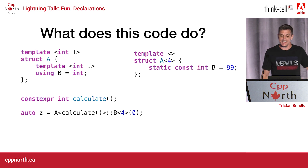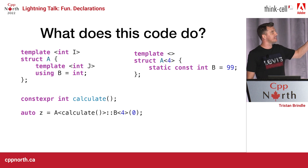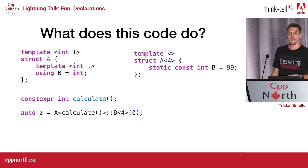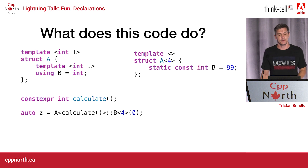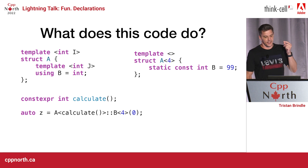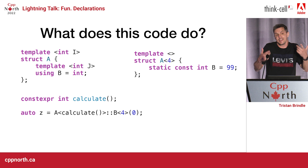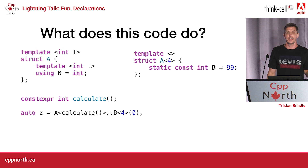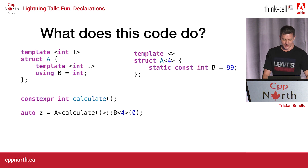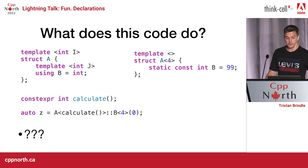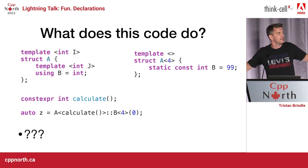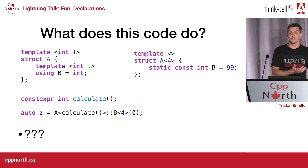So what this is saying is: is 99 less than four? The result of that is promoted to int and compared against zero. This is entirely valid C++ code. If calculate returns four, the second pair of angle brackets is actually a 'less-than.' There are two entirely different valid parses of this expression depending on what calculate returns. What does this code do? We can't know without knowing the result of calculate.